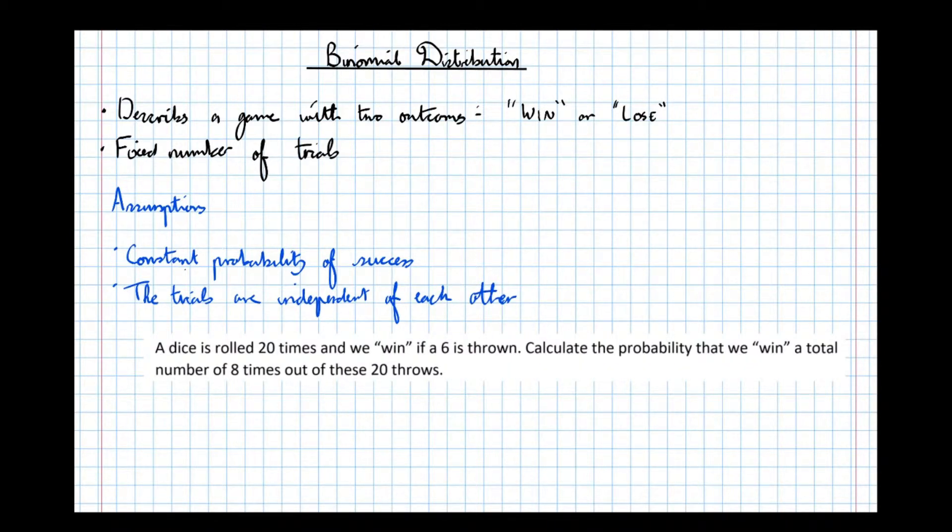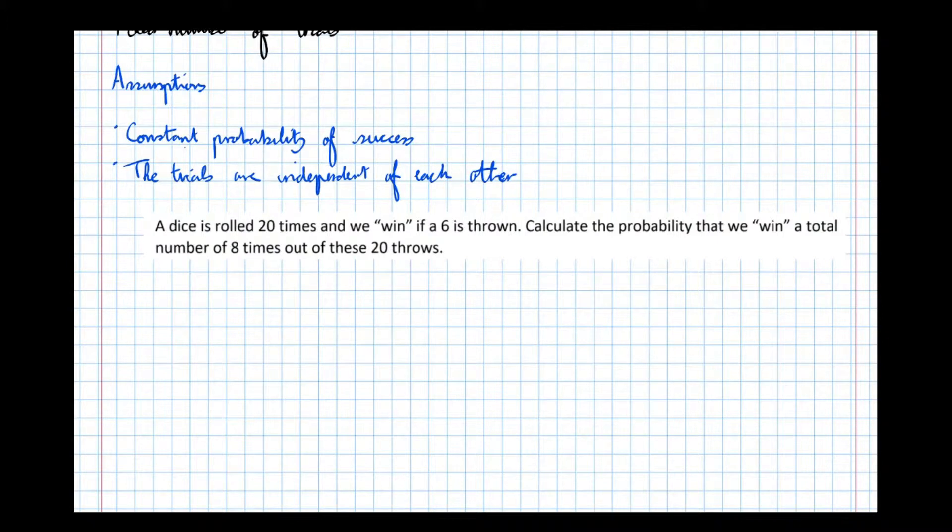So let's see what this looks like in a practical context now. A dice is rolled 20 times and we win if a six is thrown. Calculate the probability that we win a total number of eight times out of these 20 throws. Well, the probability of a win, if we roll a six, is a sixth. And the number of trials is 20.